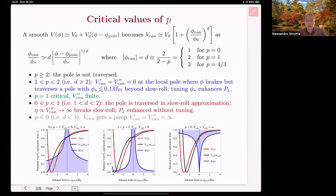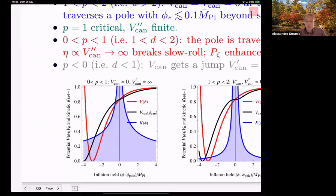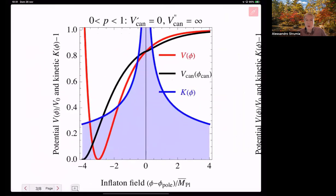However, the eta slow roll parameter gets to infinite because now the second derivative of the potential is infinite. So, this breaks the slow roll approximation and the power spectrum is enhanced even without tuning. This plot shows an example of the potential in this case. It's somehow flat, but in a different way.